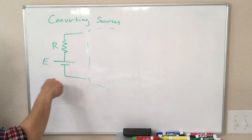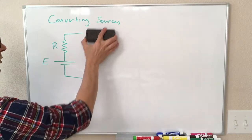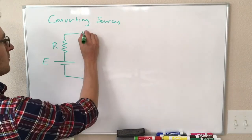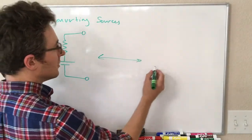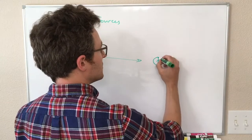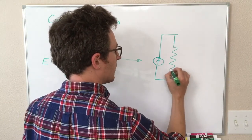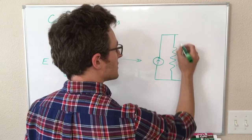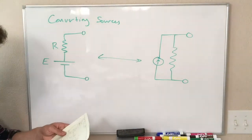This part of our circuit, if we imagine it's attached to the rest of our circuit at these two points, this is equivalent to a current source that is in parallel with the resistor connected between those same two points of our circuit.